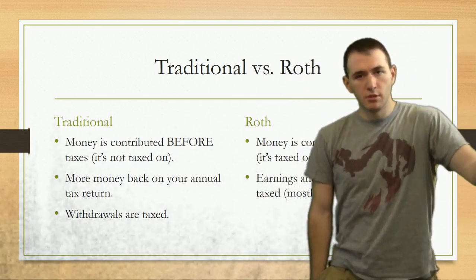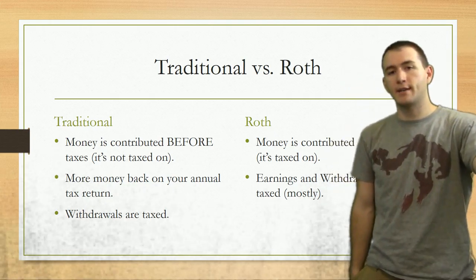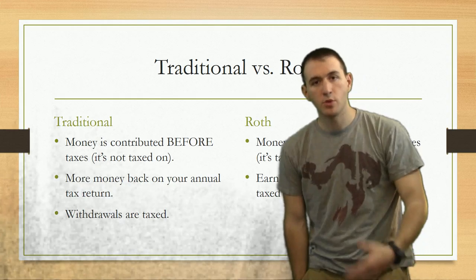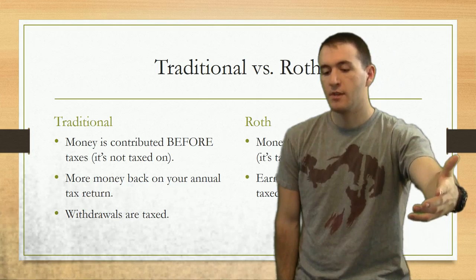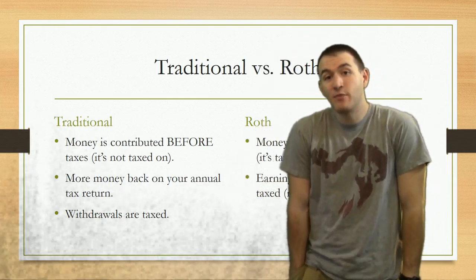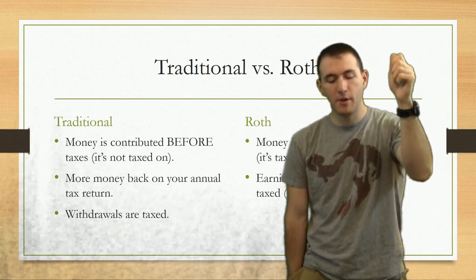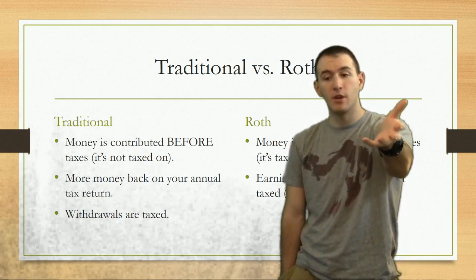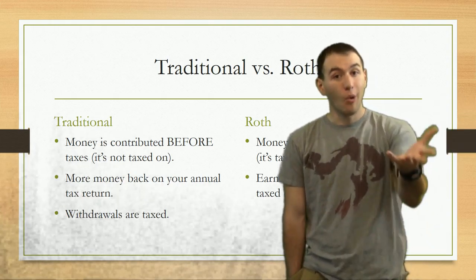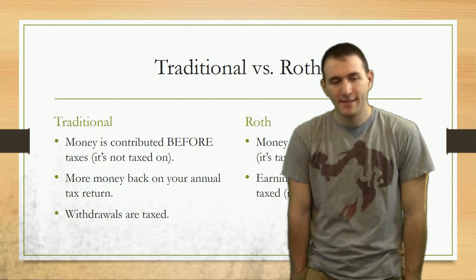Traditional is the older option — money that you contribute before taxes. As far as the IRS is concerned, you're effectively lowering your taxable income. So when you file taxes, the system says 'we took too much from you, have some back.' That's one of the advantages. You can take that tax refund money, which most of us get back around April, and invest it to have a lot more money when you're older.